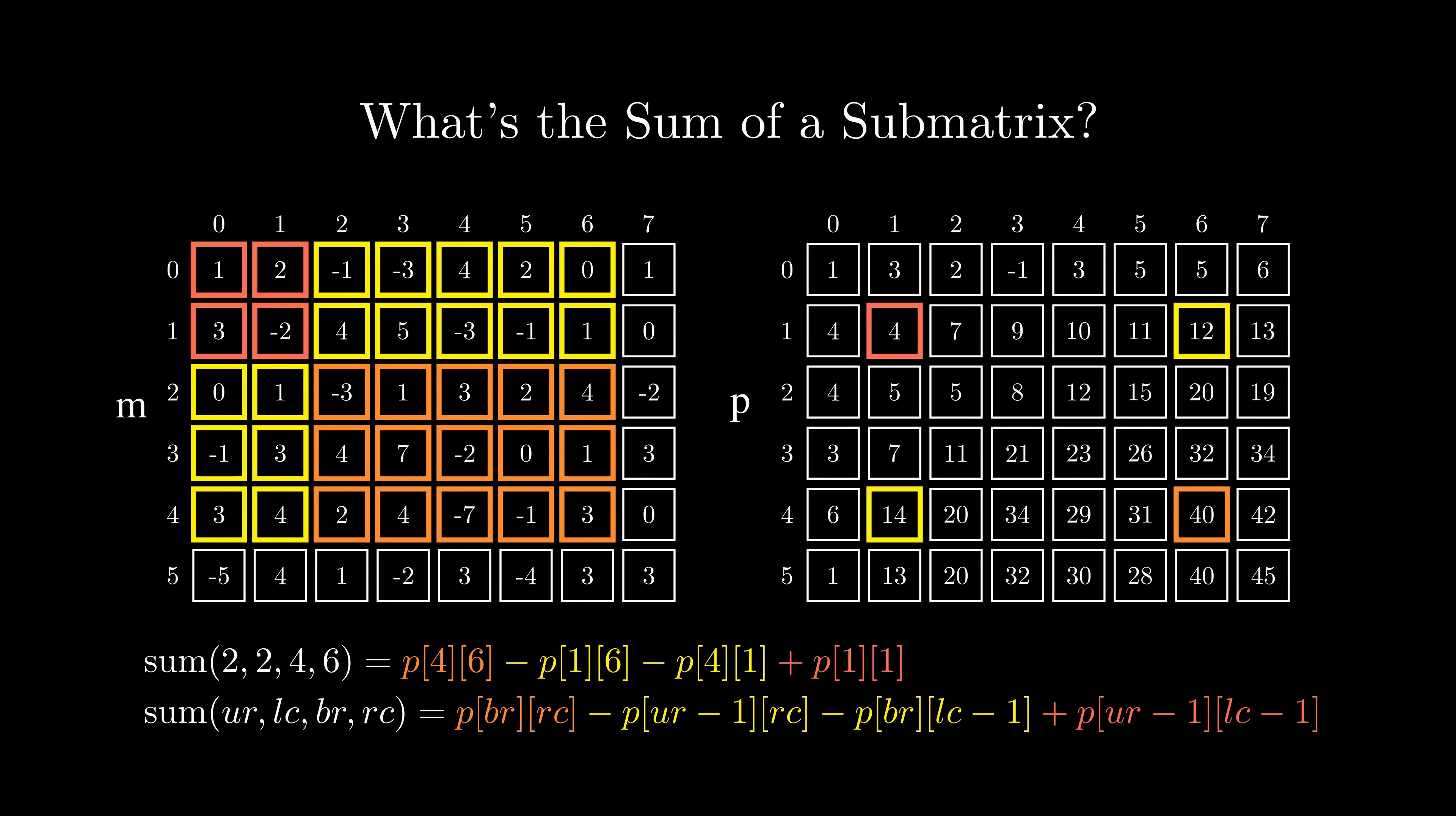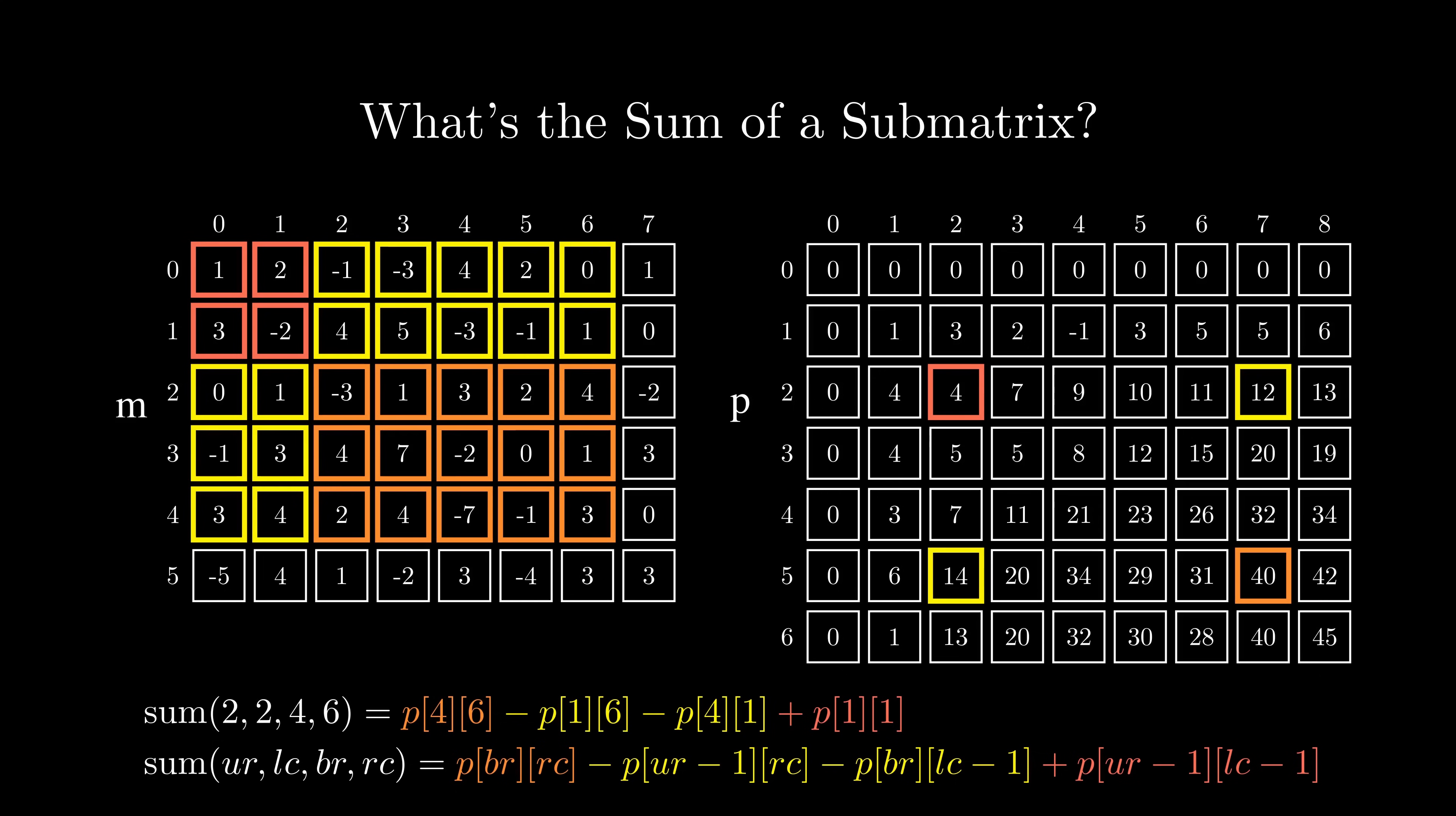To account for negative values here for the left column minus 1 or upper row minus 1, we can add padding of zeros to the prefix sum. So after adding the padding, the calculations would be shifted by 1 in all positions.